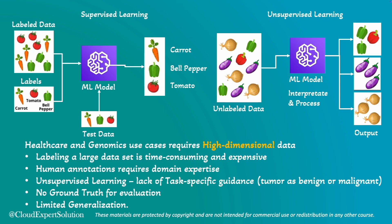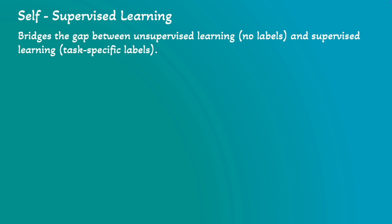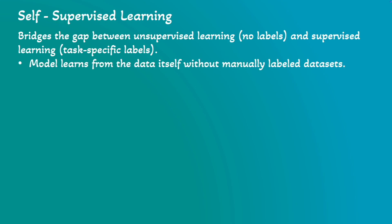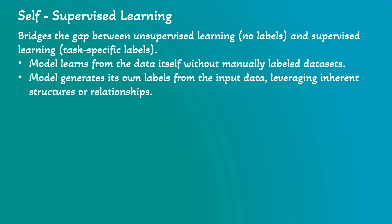There are also limited generalizations in unsupervised learning — it may not generalize well to new, unseen data, especially in healthcare where data distribution can vary widely. We can understand that supervised and unsupervised learning, while solving many problems, cannot be used for some domains like healthcare and genomics. In those use cases, self-supervised learning bridges the gap between unsupervised and supervised learning. In self-supervised learning, the model learns from the data itself without requiring manually labeled datasets. Instead, the model generates its own labels from the input data, leveraging inherent structures or relationships within the data to create supervisory signals.